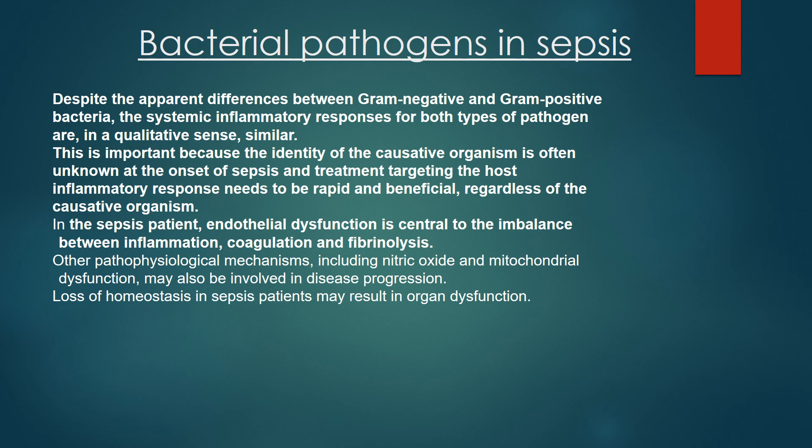In adults: gram-positive cocci, anaerobic gram-negative bacilli, and anaerobes, dependent on the presumed site of infection. IV drug users and indwelling lines: Staph aureus, coagulase-negative Staphylococcus species. Asplenic patients: Pneumococcus, Haemophilus influenzae, Meningococcus — encapsulated organisms.